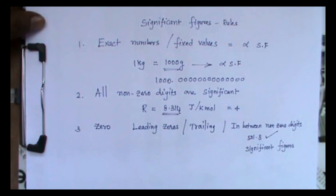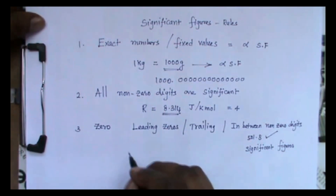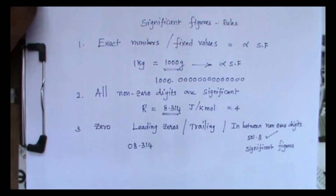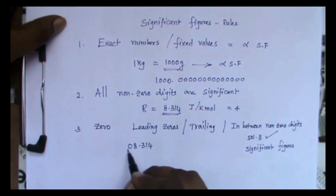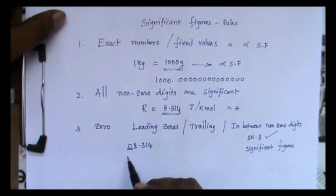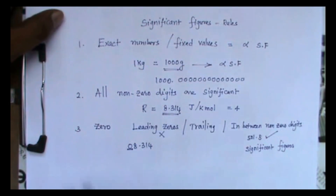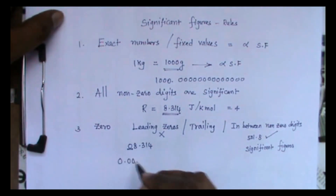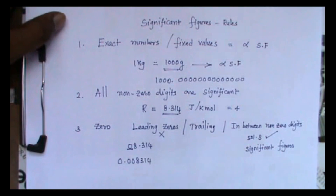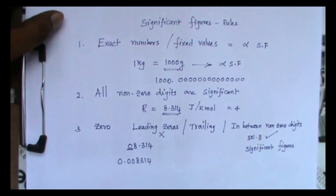What about leading zeros? For example, a value like 08.314 — this is a leading zero and has no meaning at all, so it is not significant. Leading zeros are not significant figures. This applies even after the decimal point: for a value like 0.00831, the leading zeros are not significant. Leading zeros are not significant; zeros in between non-zero digits are significant.